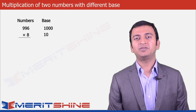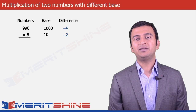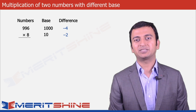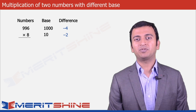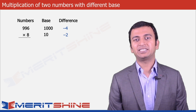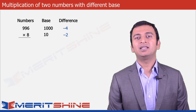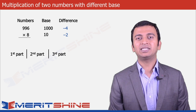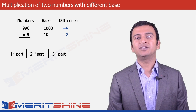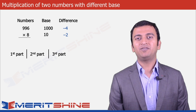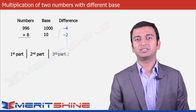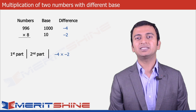The next step would be to find the differences, which would be minus 4 and minus 2 respectively. We can now proceed to write down our answer which would be in 3 parts. Let us begin by writing our third part first, which would be the product of the differences — minus 4 and minus 2 — giving us 8.